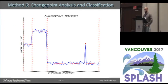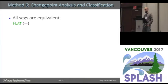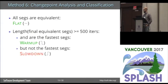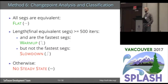The classification rules are: if all of the segments are equivalent, we say the process execution is flat — there is a tolerance involved, so if two segment means are very close, we consider them the same segment. If the length of the final set of equivalent segments is longer than 500 iterations and they are the fastest segments, then we say the process execution has warmed up. If they're not the fastest segments, then it's slowed down. The only other case is that the benchmark did not stabilize — meaning there was a change point in the last 500 iterations of those 2,000 in-process iterations.